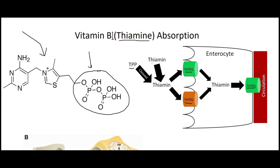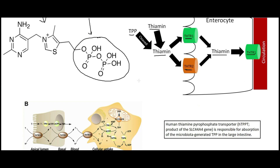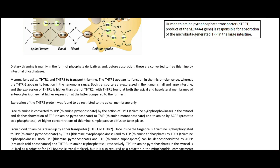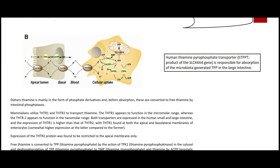We have the thiamine pyrophosphate or we can have free thiamine. In the small intestine, the thiamine pyrophosphate is dephosphorylated into thiamine before it's taken up by either THTR1 or THTR2, so it enters the enterocyte as thiamine. THTR1 then transports it out of the basolateral part of the cell into the blood circulation.